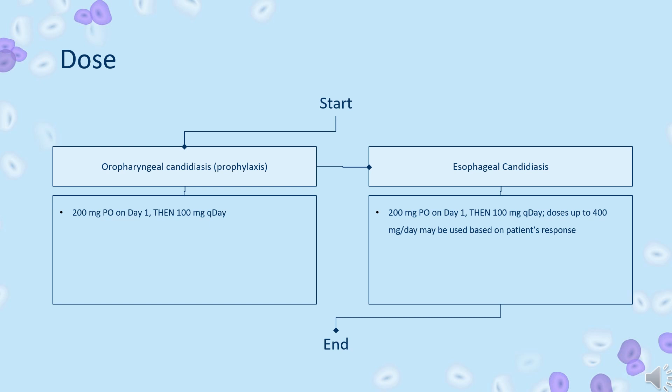Dosage of up to 400 mg once daily may be used based on patient's response. Suppression of relapse in patients with AIDS: 200 mg PO once daily. Prophylaxis of candidiasis with BMT — prevention of candidiasis incidence in patients undergoing bone marrow transplant: 400 mg PO once daily.